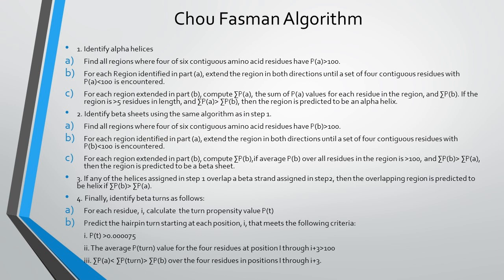For each region extended in part B, compute sigma Pa — the sum of Pa values for each residue in the region — and sigma Pb. If the region is greater than five residues in length and sigma Pa is greater than sigma Pb, then the region is predicted to be an alpha helix.